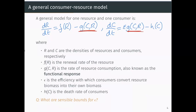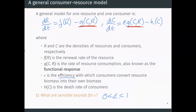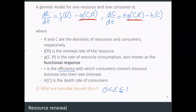So this parameter E — we can think about some sensible bounds for this. Because this is an efficiency parameter, it's going to be dimensionless, and it's telling us how good the consumers are at converting the resource into consumer biomass. Therefore sensible bounds: this has to go somewhere between zero and one. In theory, we could model it as being perfectly efficient, but generally we would want it to be between zero and one.